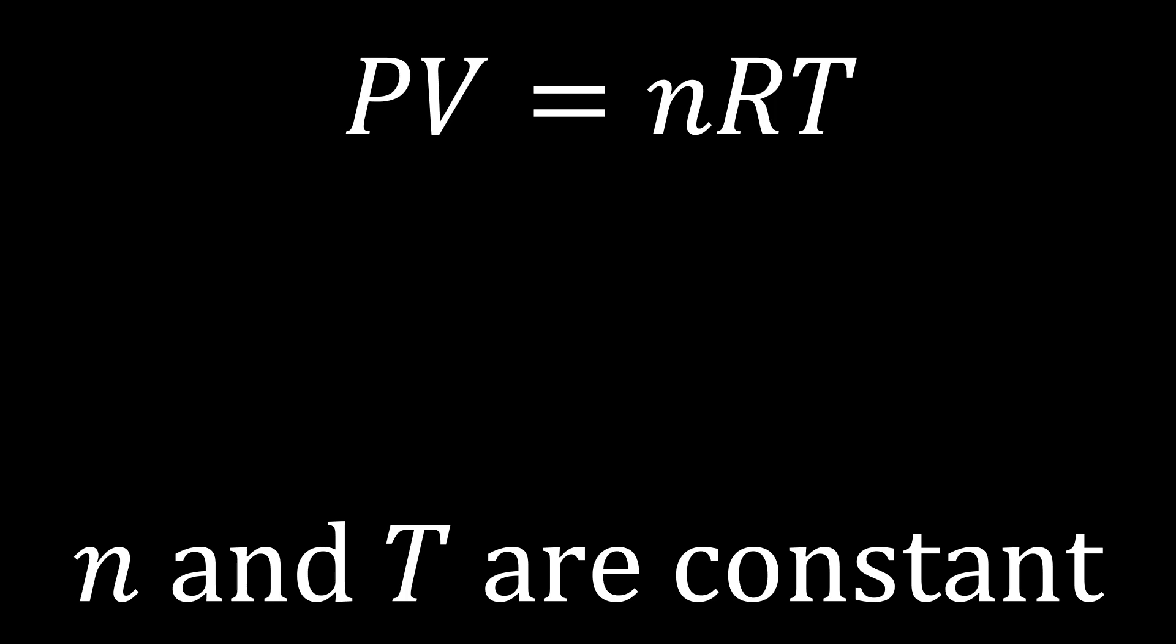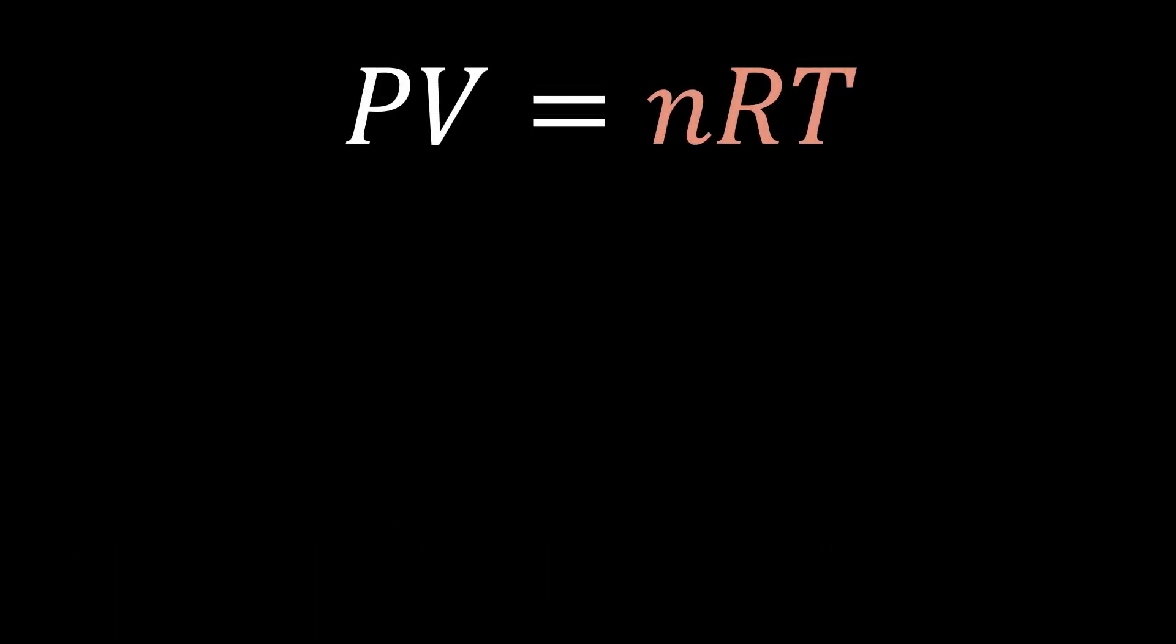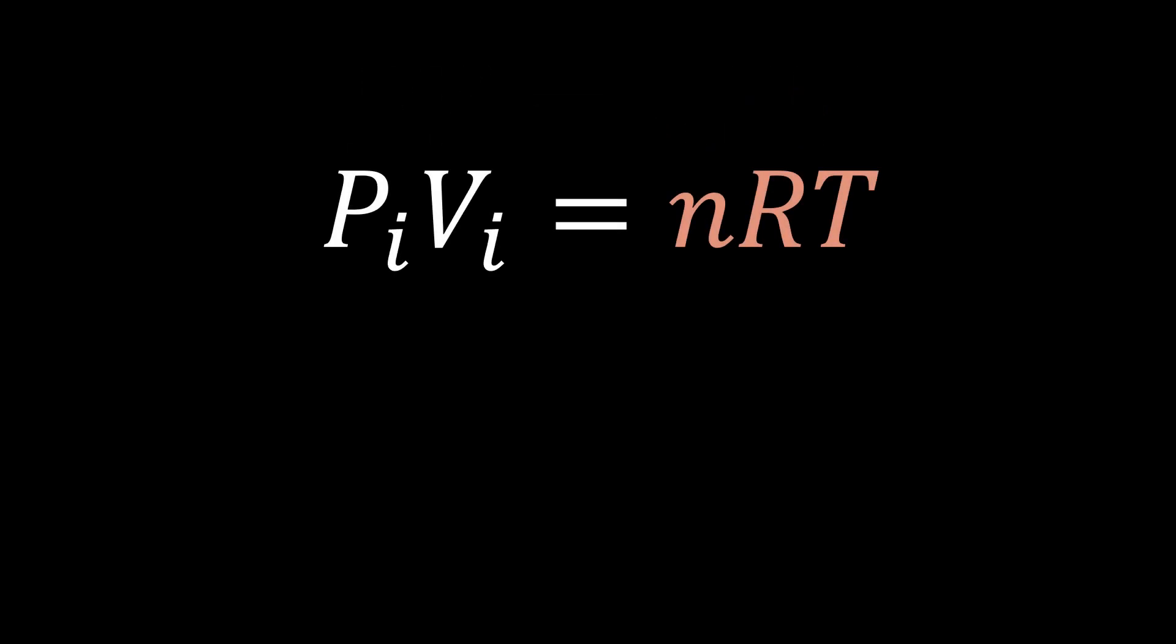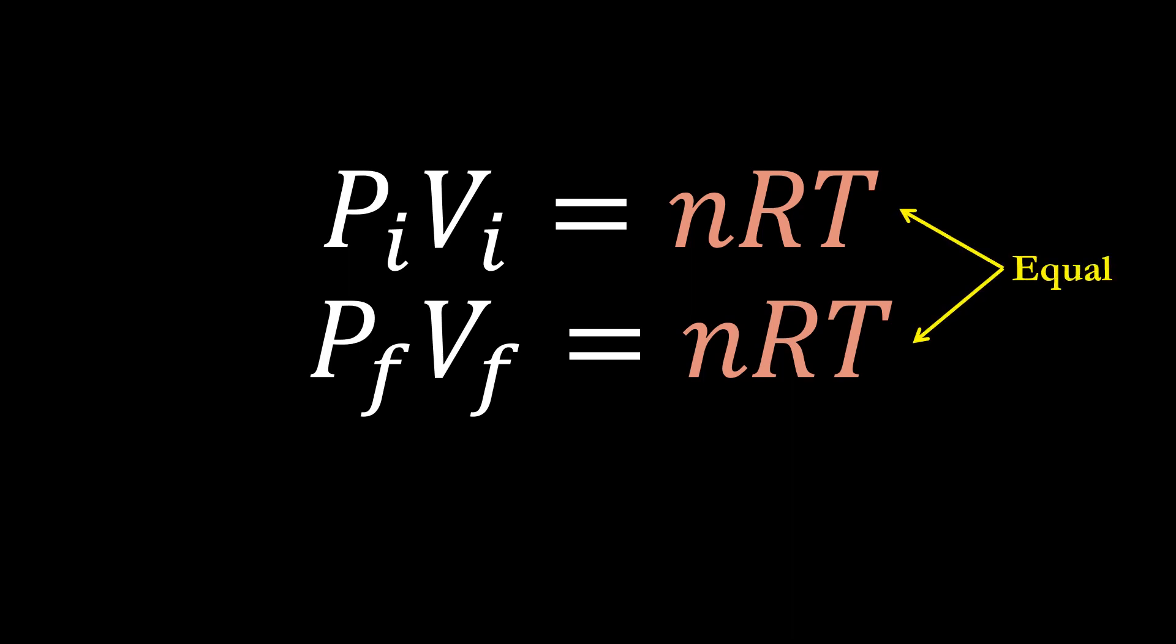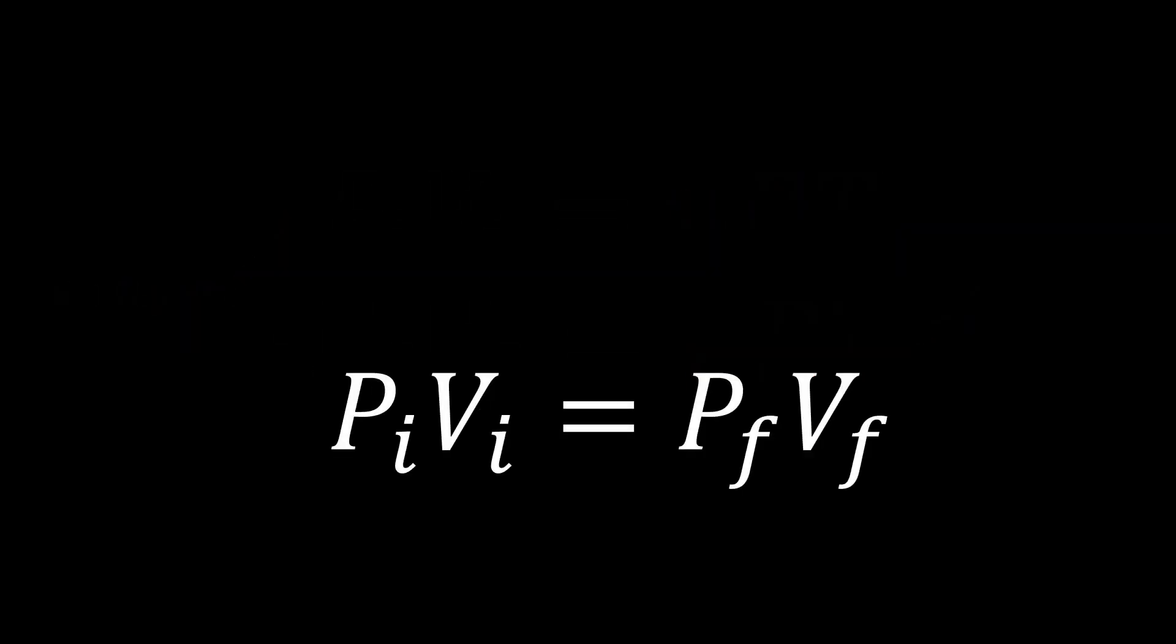We'll start with the ideal gas law, but we'll put everything that's held constant on the right side. So n, R, and T will be held constant, both in the initial state and the final state. But the P and V will vary. So we need to use the equation twice. We need to use it once for the initial state, and we need to use it again for the final state. But as you can see, the right side is the same, so we can set these two left sides equal to each other, and that results in Boyle's law.